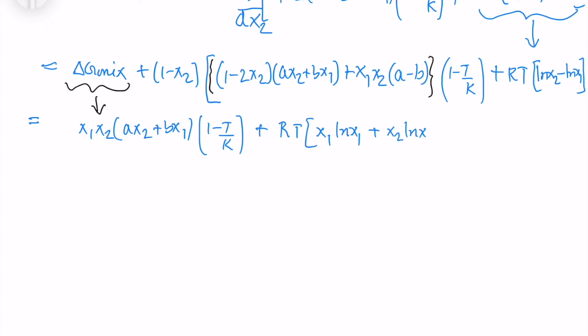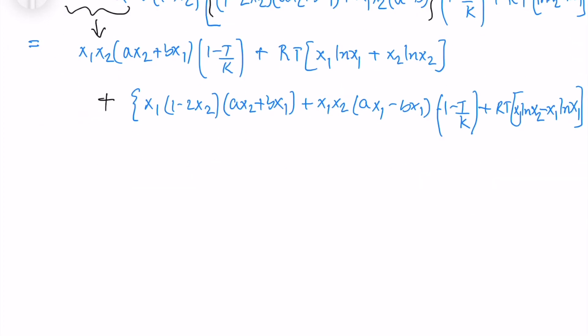Now I will expand the delta G mix which I have written initially. And I will take 1 minus x2 inside this and I will try to resolve into a much simpler equation. Now I will take this part and make it much simpler.